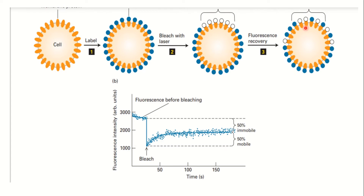If proteins are immobile in the photobleached area, it means they are attached to the cytoskeleton or multiple membrane tethers, so their rate of diffusion is slow. Proteins freely present without such anchoring will move faster. The percentage fluorescence recovered after photobleaching tells us the mobile fraction, and the rate of fluorescence recovery tells us the rate of lateral diffusion. Higher fluorescence recovery means higher mobility of that protein or lipid.